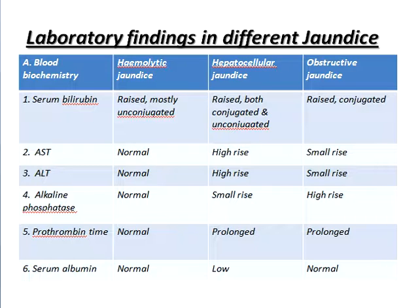AST: it is normal in hemolytic jaundice, highly raised in hepatocellular jaundice, small rise in obstructive jaundice. ALT: normal in hemolytic jaundice, highly raised in hepatocellular jaundice, small rise in obstructive jaundice. Alkaline phosphatase: normal in hemolytic jaundice, small rise in hepatocellular jaundice, highly raised in obstructive jaundice.